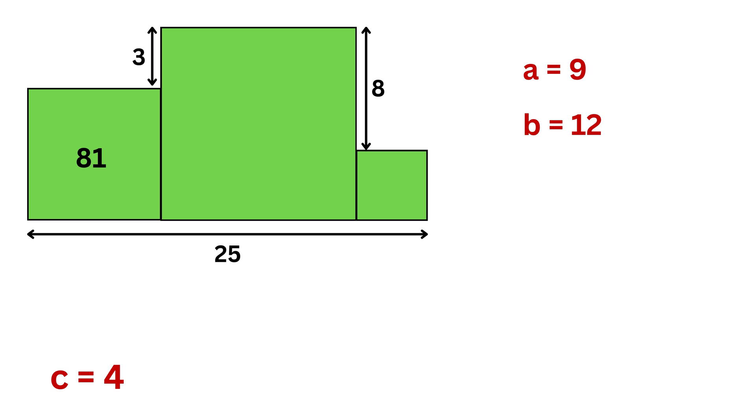For the large square, the area is 12 times 12 which gives 144 square units. And for the small square, the area is 4 times 4 which gives 16 square units.